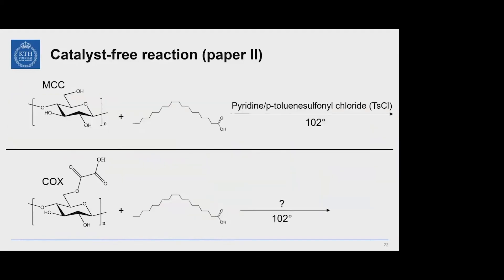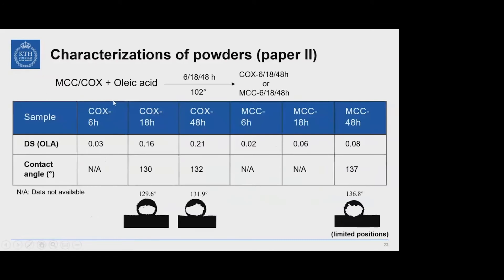The most important reason relates to the catalyst. Hydrophobizing normal cellulose like MCC typically requires toxic catalysts such as pyridine or toluene sulfonyl chloride. However, we noticed this could be a classic Fischer esterification, which can use acid catalysts. In COX, we have inherent carboxyl groups that may act as catalysts, potentially avoiding toxic catalysts. So we reacted COX or MCC with oleic acid for three different times: 6 hours, 18 hours, and 48 hours.